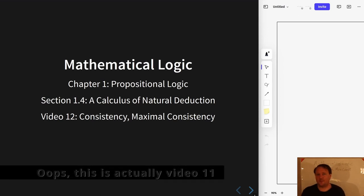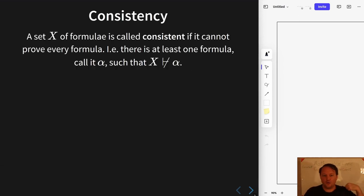Welcome to the next video in the mathematical logic series, this time talking about consistency and maximal consistency. The definition of a consistent set is fairly straightforward. A set is called consistent if there is at least one formula it cannot prove.